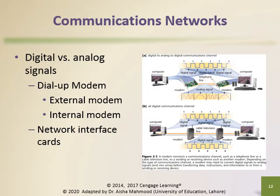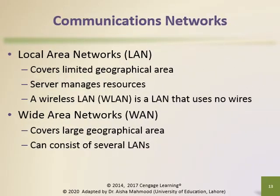Networks are classified as either local area networks or wide area networks. A local area network (LAN) is a communications network that covers a limited geographical area such as a school, office building, or group of buildings. A LAN consists of computers connected to a central computer or server. A server manages the resources on a network and provides a centralized storage area for software programs and data. A wireless LAN uses no wires; instead it uses wireless mediums such as radio waves.